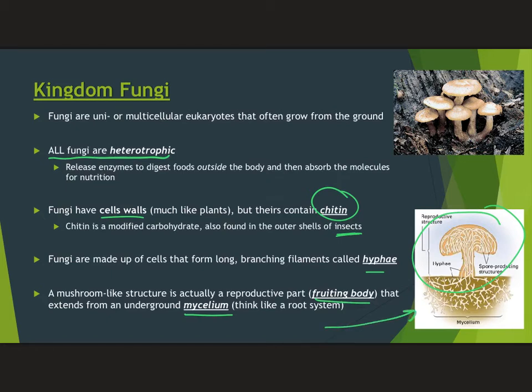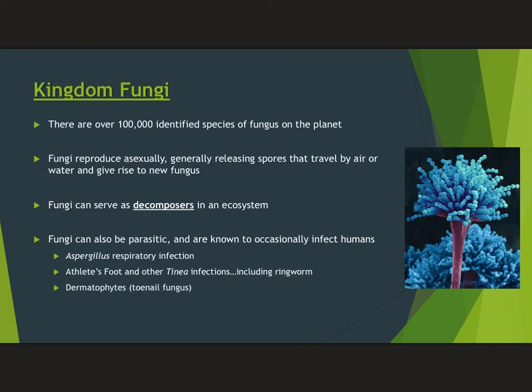The mycelium is kind of like a root system, and it can be massive. So if you see some mushrooms sprouting in your backyard on one side of the yard and others on the other side, it's probably the same fungus with a massive underground mycelium underneath your yard. The fungal kingdom is huge — over a hundred thousand different fungi on the planet. Fungi generate spores which allow them to reproduce asexually; each spore can become a new fungus itself.